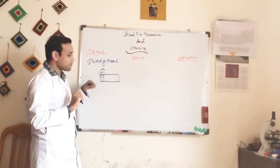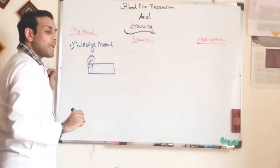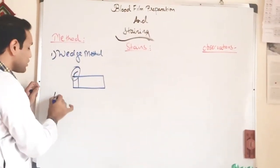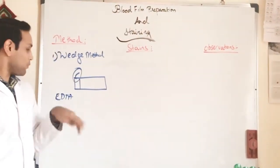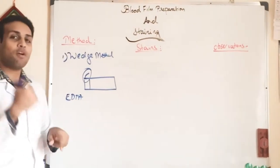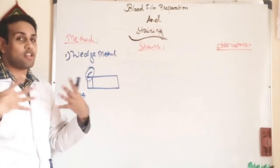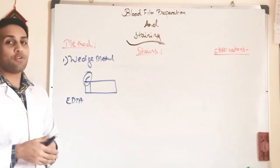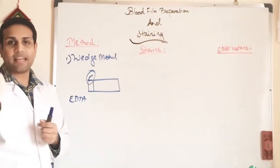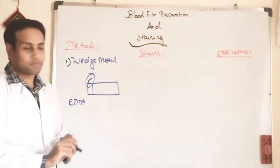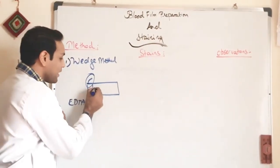After noting the patient's information, we take a drop of blood. Since we are working in a hospital setting, the sample comes from an EDTA tube. We take a drop from it and place it on the slide. Alternatively, for a quick blood smear in a small clinical setting, we can use a finger-prick and place a drop of blood directly onto the slide and immediately prepare the smear.